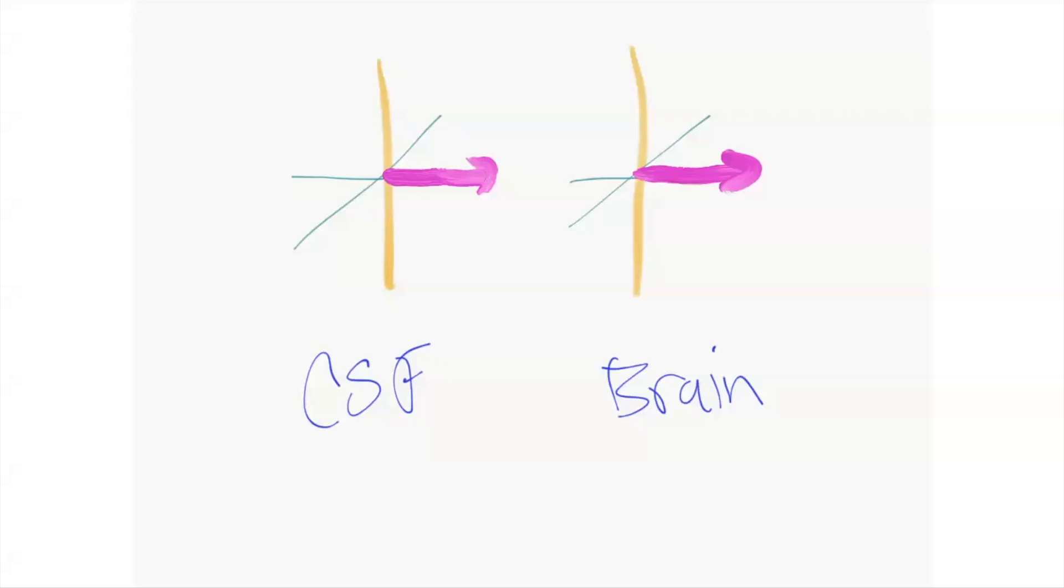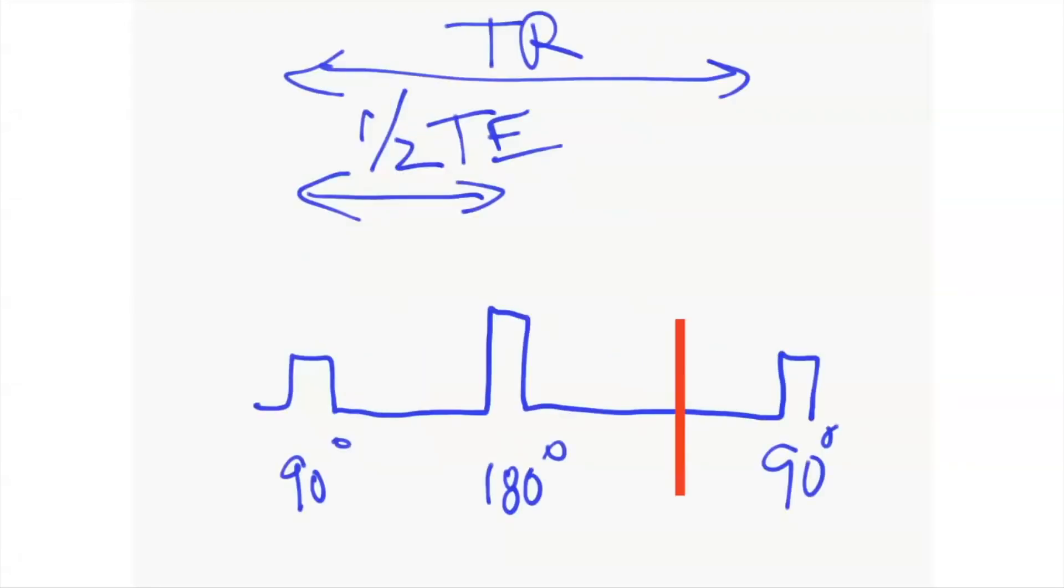Then we use a 90-degree pulse. We put energy into the system and displace that net magnetization into the transverse plane. Now we have these protons in the transverse plane and we can use an antenna to pick up the signal induced in the wire. The CSF and brain look about the same. Where does the contrast come from? This is where we come back to these pulse diagrams. It is not in the static state where we look at differences in signal. It's what happens dynamically as the radiofrequency pulses interact with the tissues.